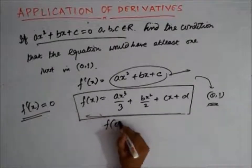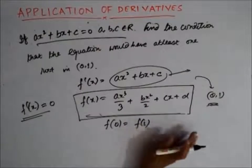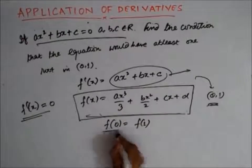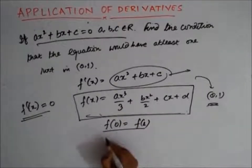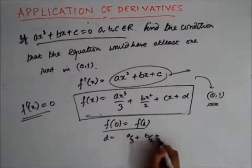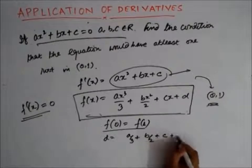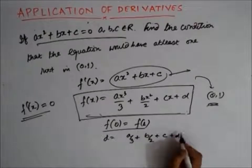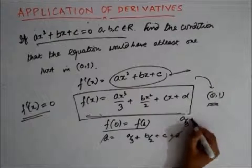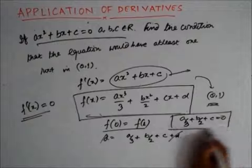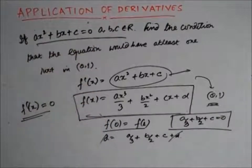If it satisfies Rolle's theorem, that means φ(0) should be equal to φ(1). Also, since this is a polynomial, it is continuous and differentiable. So the only condition I need to ensure is that φ(0) equals φ(1). φ(0) is D, and φ(1) is a/3 plus b/2 plus c plus D. So D gets cancelled, and my condition is a/3 plus b/2 plus c equals 0. That is the condition that ensures this equation has a root in (0, 1).